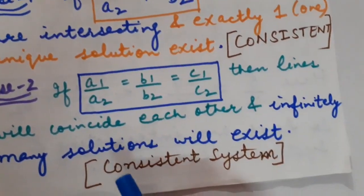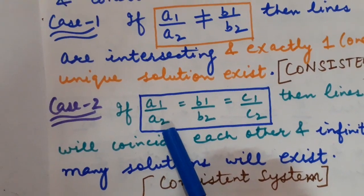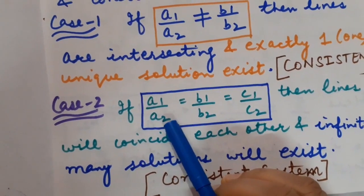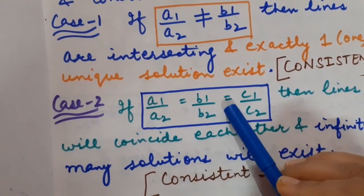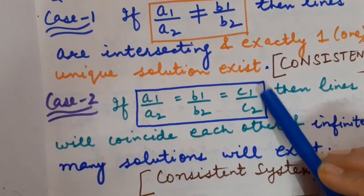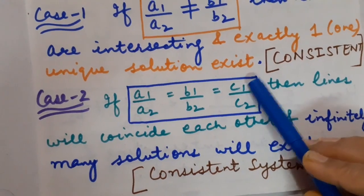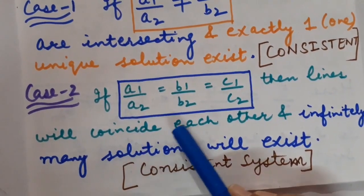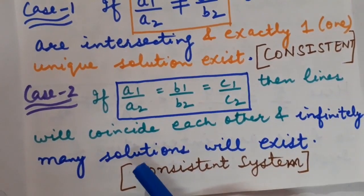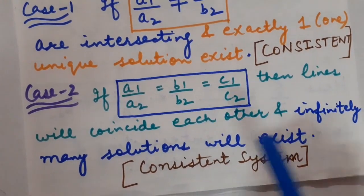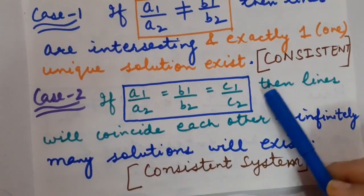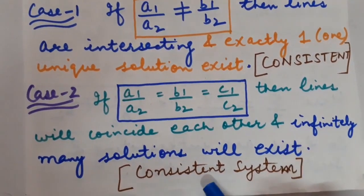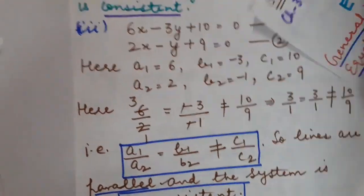Case number 2: if a1/a2 = b1/b2 = c1/c2 — the ratios of the coefficients of x, y, and the constant terms are all equal — then the lines are coinciding each other and there will be infinitely many solutions. One line will overlap the other. Since solutions exist, it will again be a consistent system.